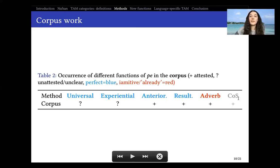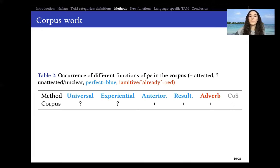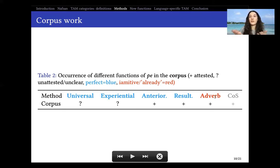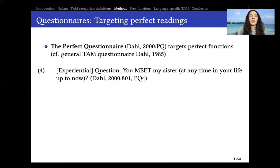There is also another meaning associated with P in Nafsan which I won't be discussing in this talk — if you're interested, you can look at my PhD thesis about this change-of-state category. So we have blue representing perfect and red representing yamitive or already, and this is the uncertainty we're resolving with the methods discussed here.